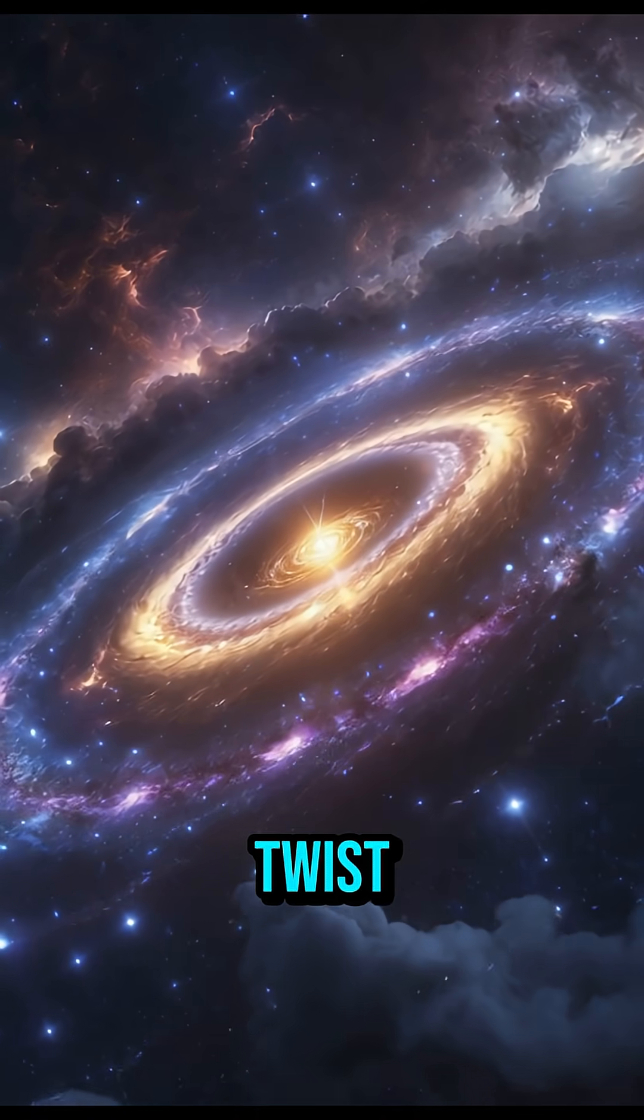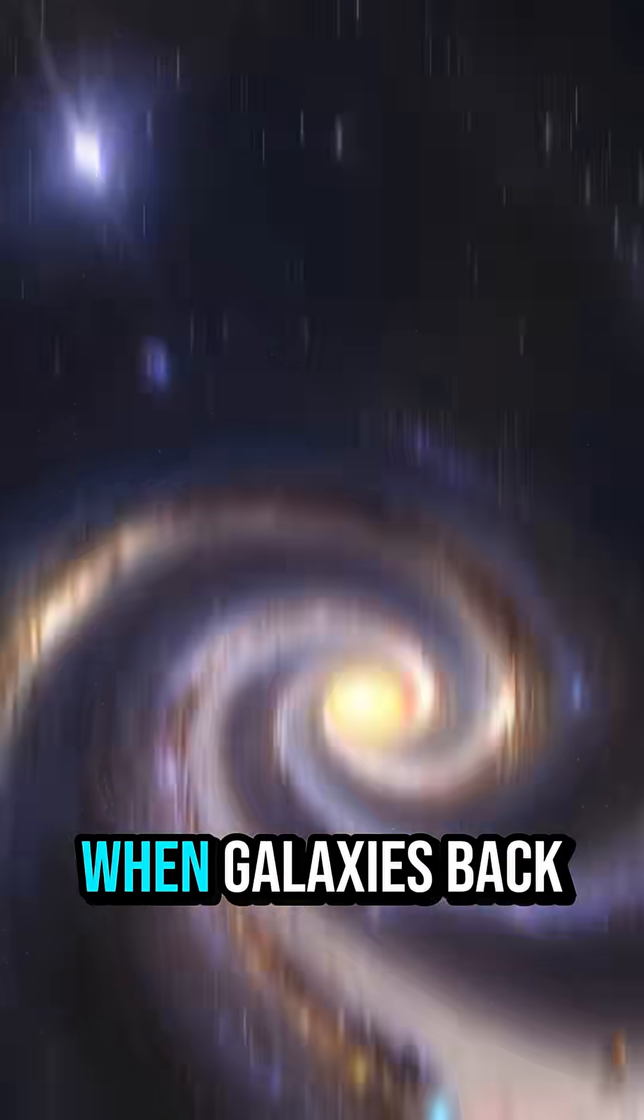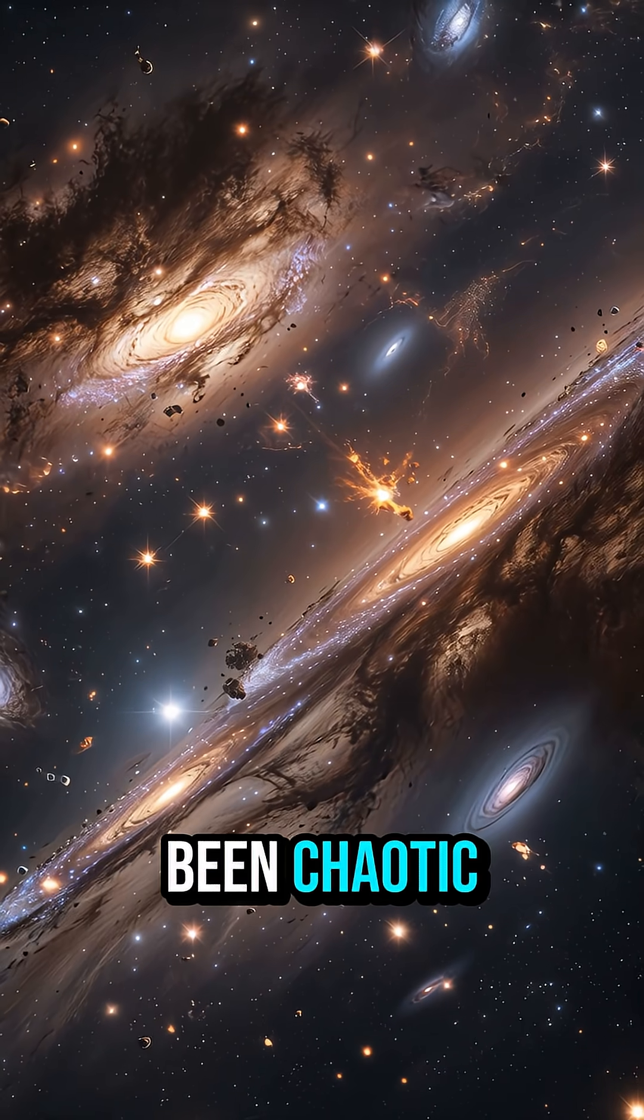But here's the twist. It already looks like a grown-up spiral, calm and massive, when galaxies back then should have been chaotic.